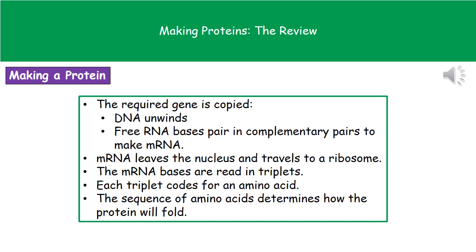As the mRNA gets to the ribosome, it feeds through. The ribosome reads those sequences of three bases — those triplet codes. As it reads a triplet, it brings an amino acid in, then moves along to the next triplet and brings in another amino acid. Those two amino acids join together, and this process continues right the way along the mRNA strand until it reaches the end and releases the amino acid chain. Depending on which amino acids we've got determines how the protein then folds.